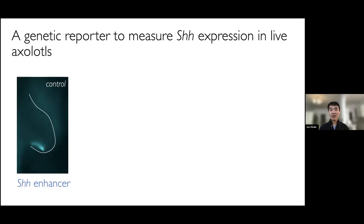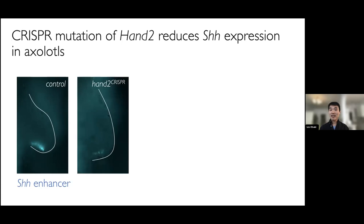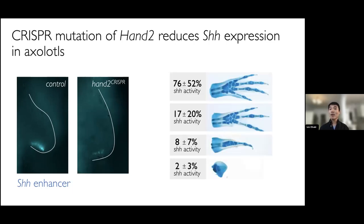When we generated HAND2 mutant animals — mosaic mutant animals by CRISPR in the background of this reporter — we found that this significantly reduced expression of the sonic hedgehog reporter, confirming that HAND2 is indeed necessary for sonic hedgehog expression. Importantly, this had consequences for regeneration: when we took the limbs that formed and then amputated them, these limbs were unable to regenerate properly, and the most mutated limbs did not regenerate at all. So the genetic interaction of HAND2 being necessary for sonic hedgehog expression appears to be conserved in axolotls.